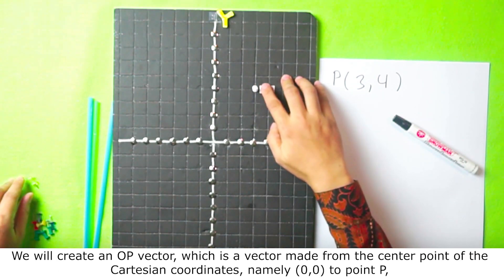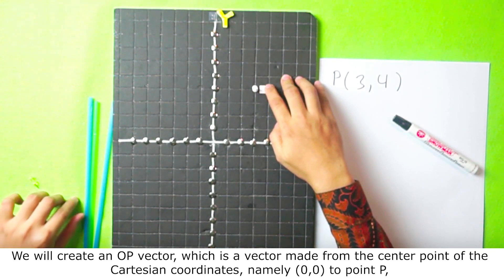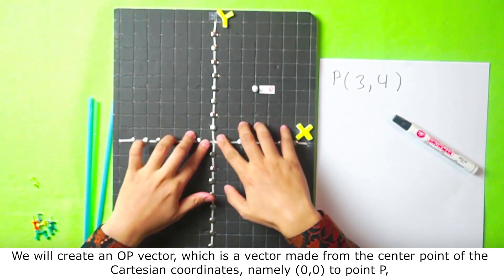We will create an OP vector, which is a vector made from the center point of the Cartesian coordinates, namely 0, 0 to point P.